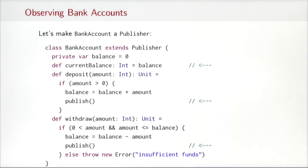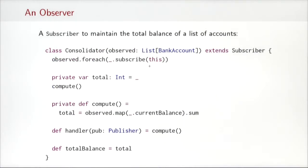So let's add a view to this picture. The thing I want to do is define a class consolidator that observes a list of bank accounts and that would always be up to date with the total balance of all the bank accounts. So the sum of all the balances in the observed bank accounts. Consolidator is a subscriber. So what this Consolidator does initially is it subscribes itself to all observed bank accounts as an initialization action.